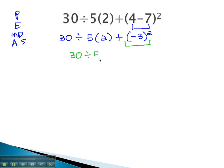30 divided by 5, times 2, plus...and negative 3 squared is 9. Whoops...30 divided by 5, times 2, plus 9.